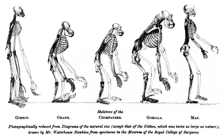Huxley redeemed that pledge by publishing, in the January number of the Natural History Review for 1861, an article demonstrating three propositions: first, that the third lobe is neither peculiar to nor characteristic of man, seeing that it exists in all the higher quadrumana; second, that the posterior corner of the lateral ventricle is neither peculiar to nor characteristic of man, as it also exists in the higher quadrumana; third, that the hippocampus minor is neither peculiar to nor characteristic of man, as it is found in certain of the higher quadrumana.